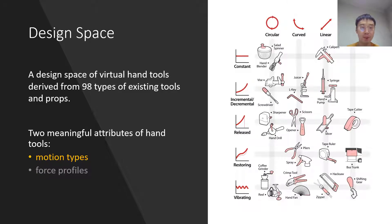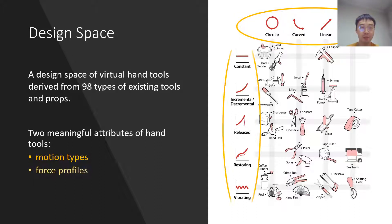We derived the design space for virtual hand tools from a collection of 98 existing handheld tools and props. We found that the majority of hand tools involved four motion types — circular, curved, linear, and complex — and five force profiles: constant, incremental, decremental, released, restoring, and vibrating.